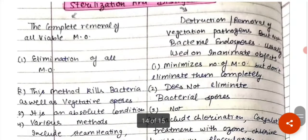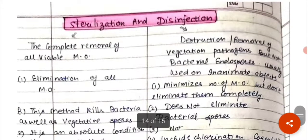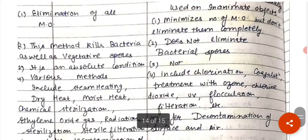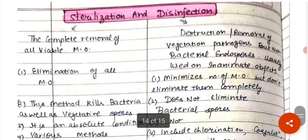In sterilization there is elimination of all microorganisms. But in disinfection, the number of microorganisms is minimized, not completely eliminated. Sterilization kills bacteria completely, whereas disinfection does not eliminate everything — bacterial spores are not destroyed by disinfection, but in sterilization, bacterial spores are killed.